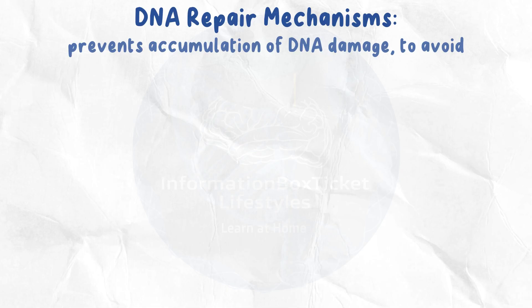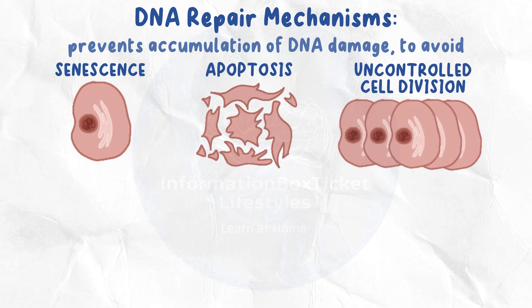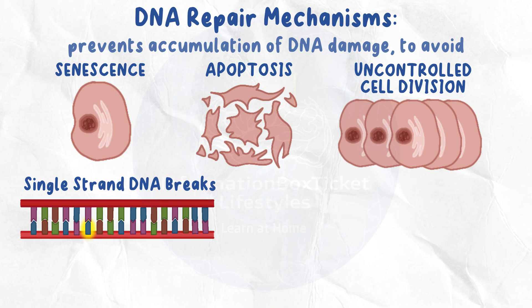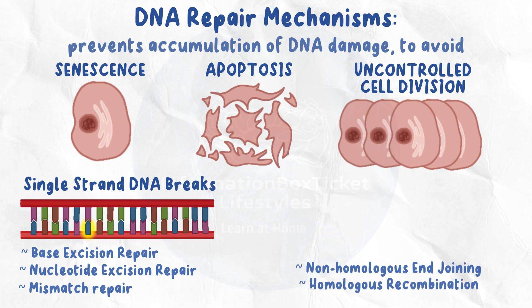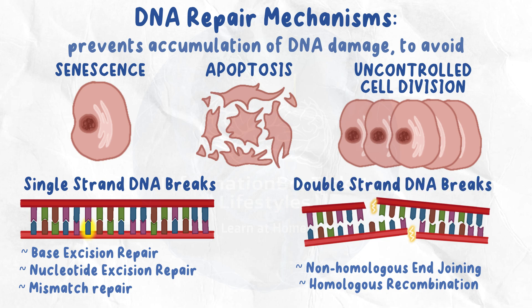To quickly review: DNA repair systems aid in the prevention of senescence, apoptosis, uncontrolled cell proliferation, and tumor development. Repairing single-strand breaks can be accomplished through three methods: base excision repair, which corrects chemically-induced deamination damage; nucleotide excision repair, which corrects pyrimidine dimers caused by UV radiation; and mismatch repair, which corrects nucleotide mismatches that DNA polymerase failed to correct. Both homologous recombination and non-homologous end joining can repair double-strand DNA breaks.